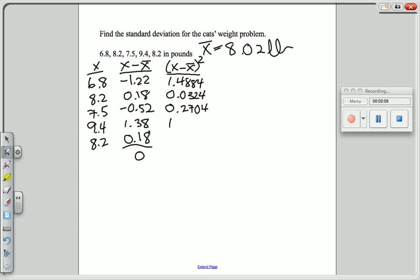If you square 1.38, you get 1.9044. And if you square 0.18, you again get 0.0324.